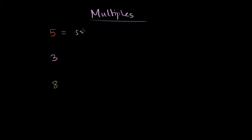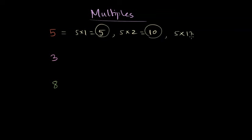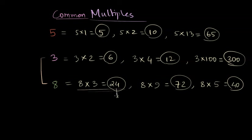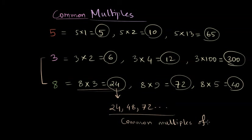If I multiply 5 by 1, I get 5 — which is a multiple of itself. Multiply by 2 and I get 10. Multiply by 13 and I get 65. Since I can choose any number, there are infinite multiples of any given number. Similarly for 3 and 8. Now, to find common multiples of 3 and 8, a simple method is to multiply them: 8 times 3 equals 24. So 24 is a common multiple of 3 and 8, and every multiple of 24 — such as 24, 48, 72, etc. — are all common multiples of 3 and 8.